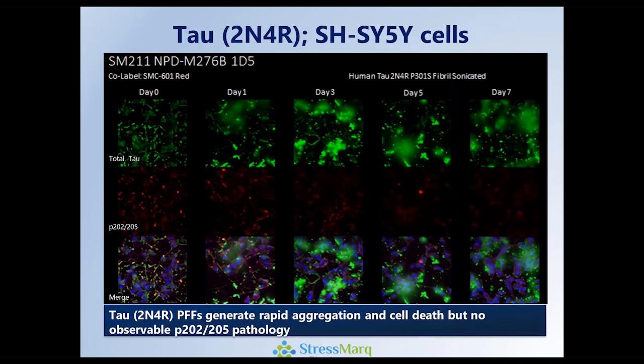If we take the larger construct, the 2N4R, and introduce it to CHI-5 cells, we can see in the top panel using a total tau antibody that aggregation is quite aggressive and cell death follows relatively quickly. If we look for the phospho signal at 202 and 205, otherwise known as the AT8 site, we don't really see any increase, although this could be due to the toxicity of the fibrils.